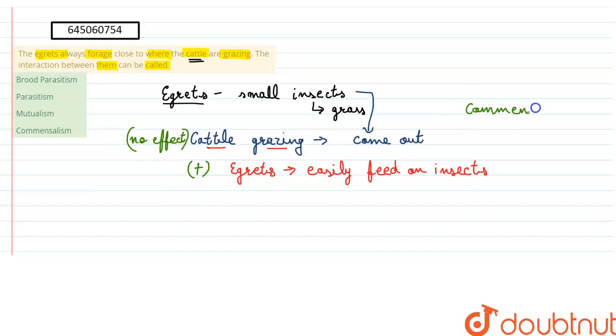This is when one of the partners is benefited and the other is neither benefited nor harmed. This is called commensalism. So our answer to the question would be option four. If we look at other options, brood parasitism is when one organism lays eggs in the nest of another organism and the example for this is